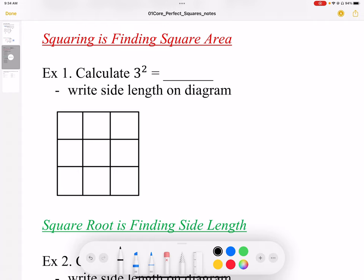3 squared means the side length is 3, so I have 1, 2, 3 on both length and width. That square, the area, is the answer to squaring it. When I square something, I get area. If I count up the square areas, I end up with 9 squares. So 3 squared equals 9, and I can see that on my picture.